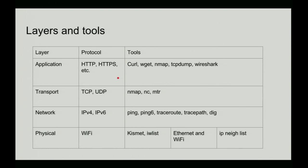TCP dump is an interesting little tool for looking at networks. How many people know what a man-in-the-middle attack is? TCP dump is how you do that. There's also Wireshark, which is just like TCP dump except it uses a graphical user interface — nice and colorful. If some joker comes along and asks what I'm doing, I say I'm doing abstract art. I'm not actually breaking into a network or anything like that.